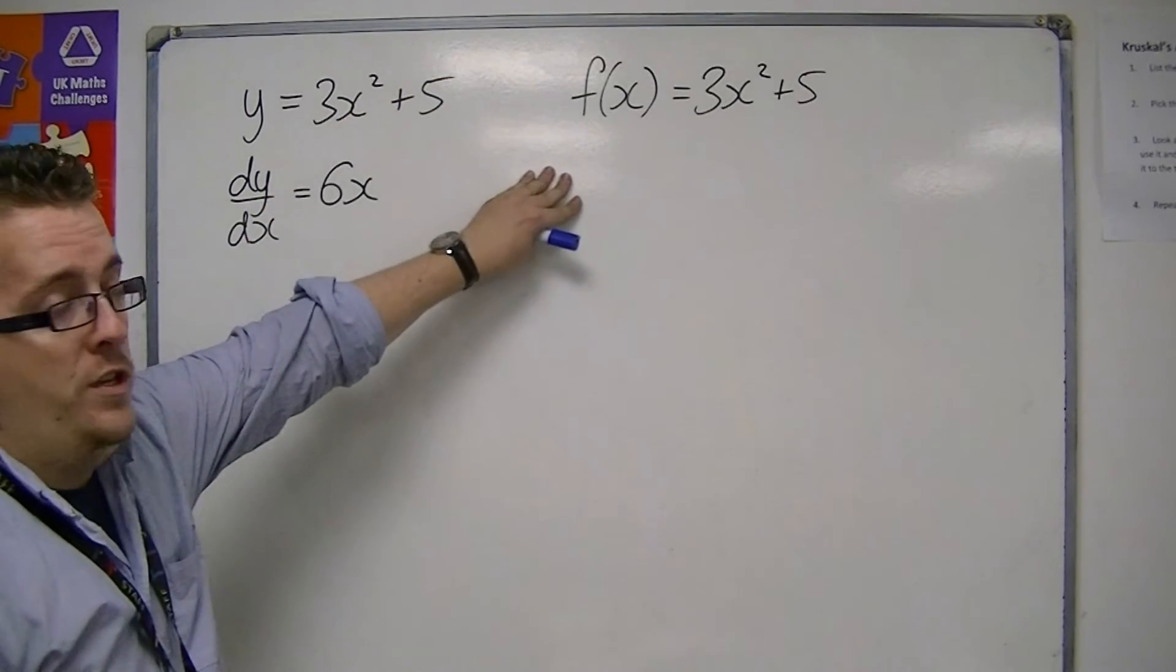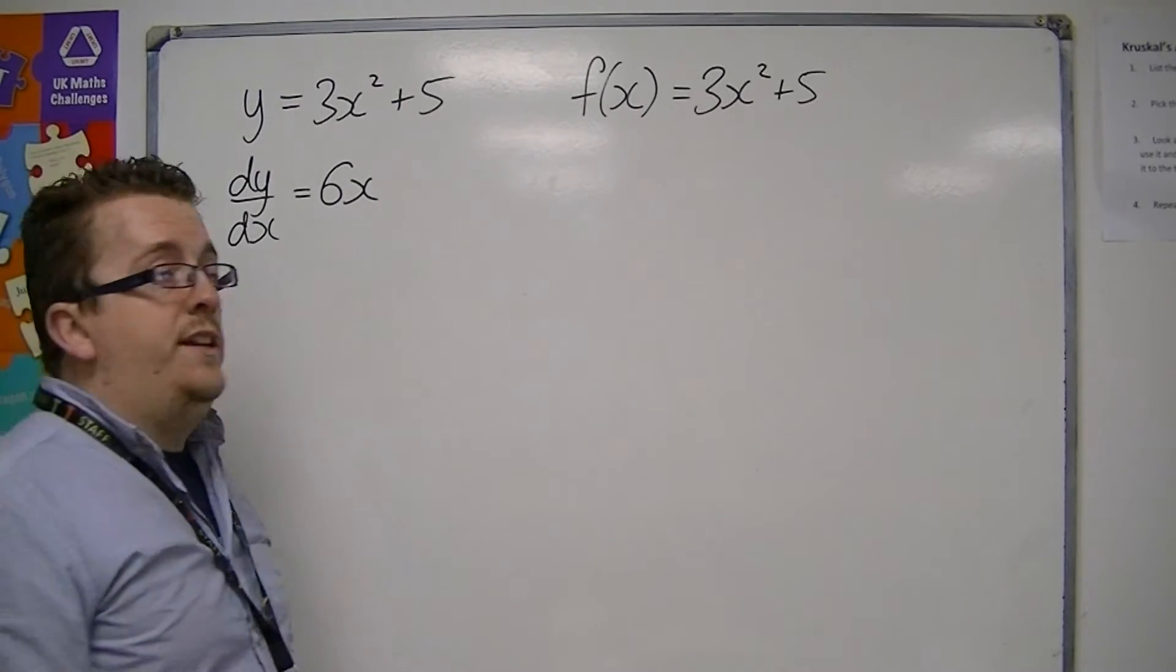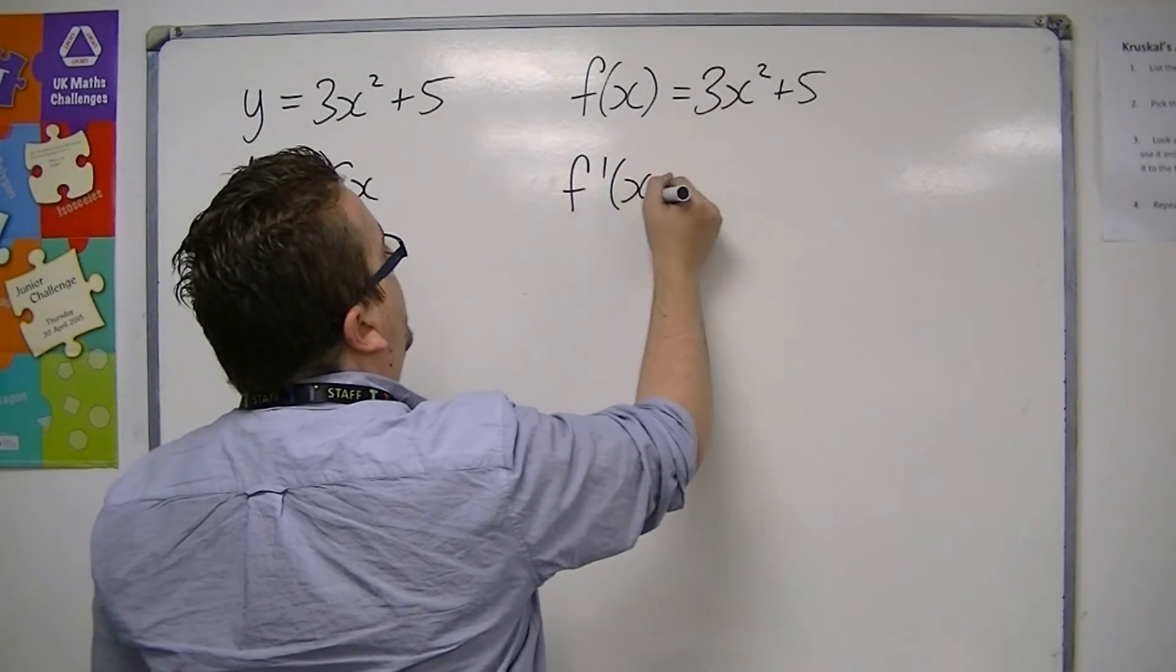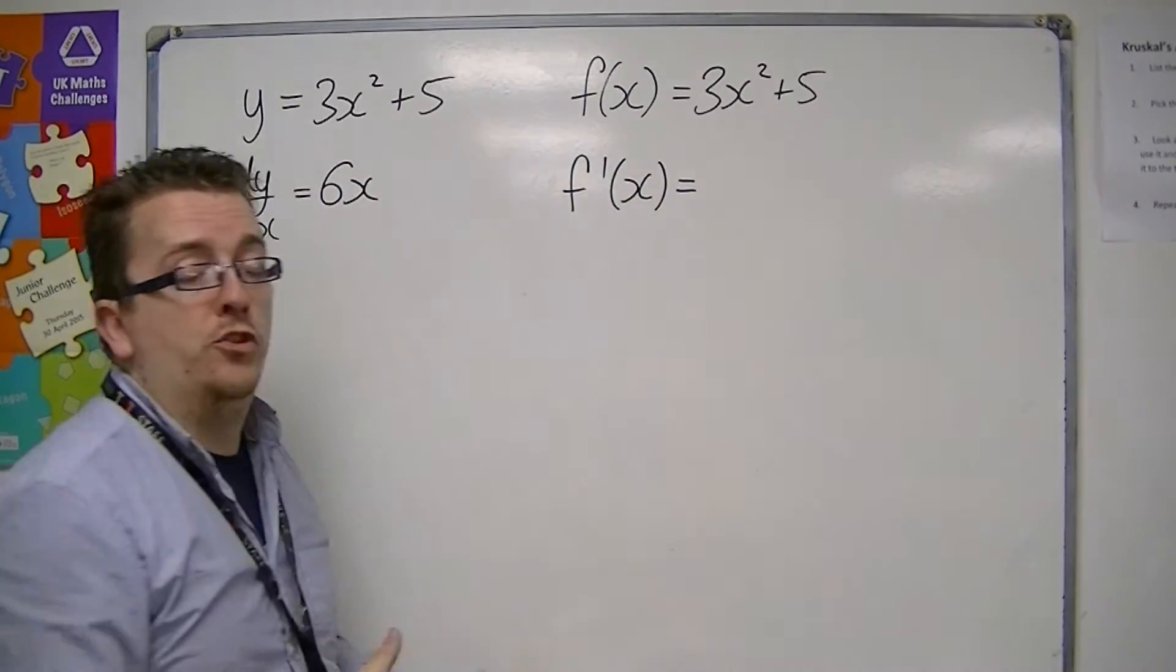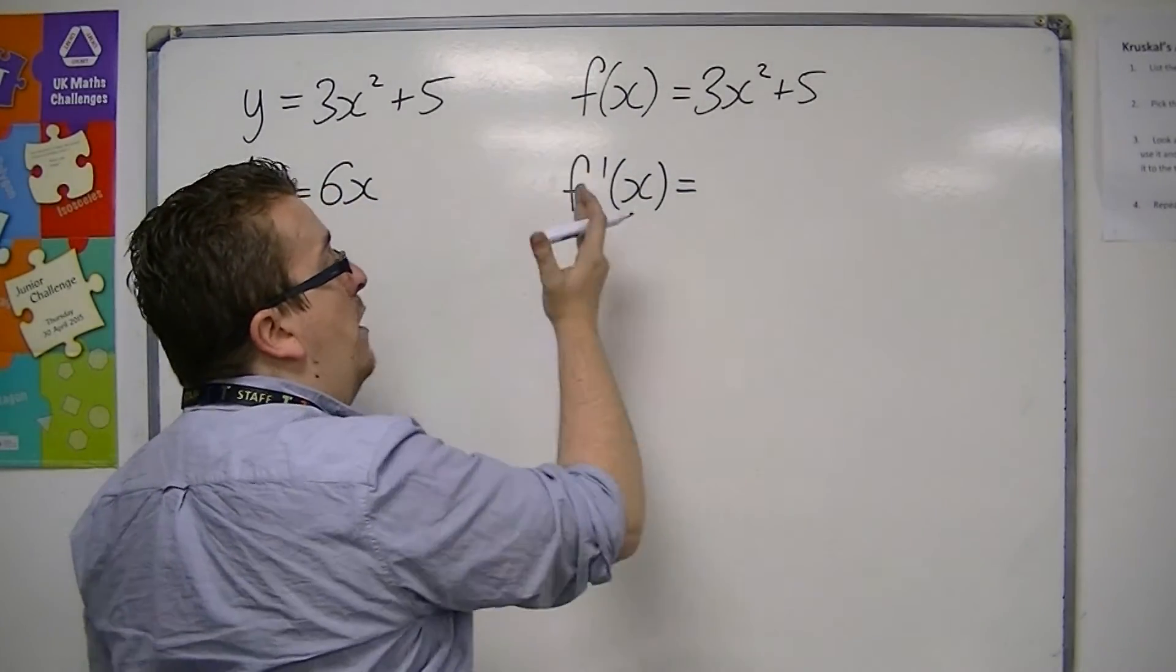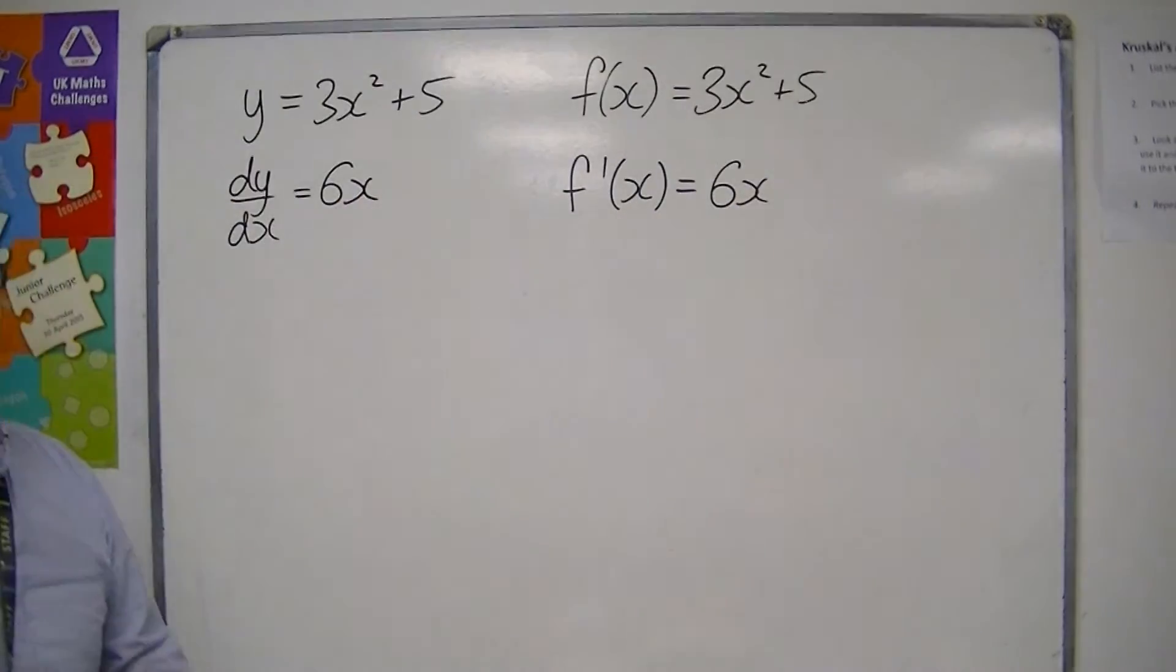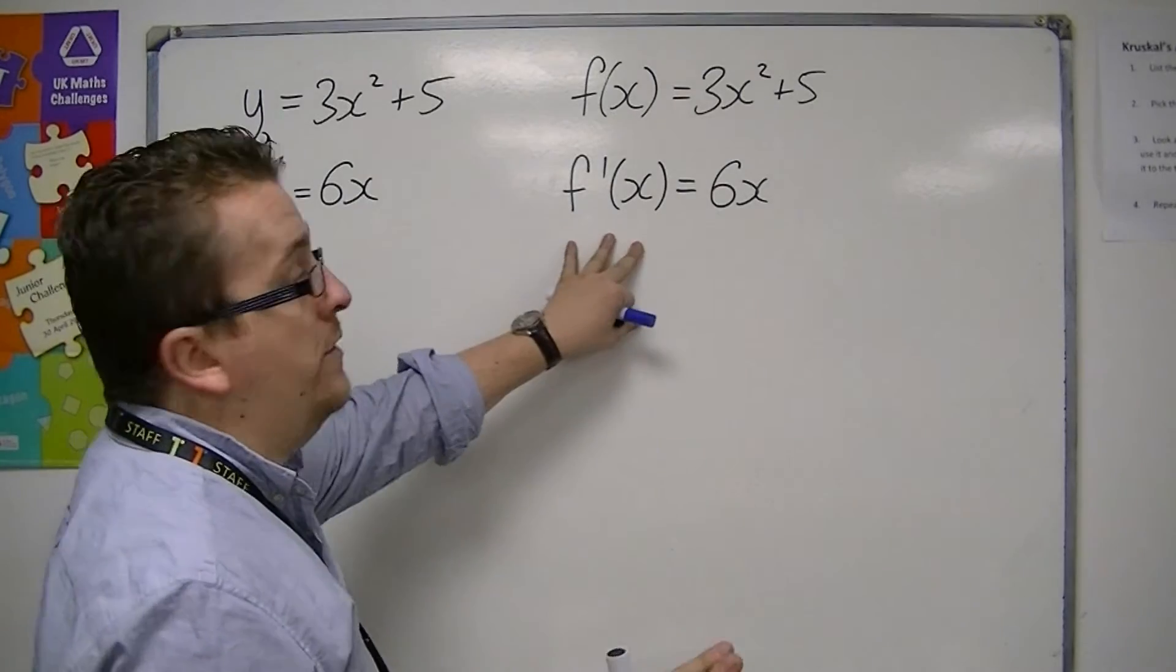For function notation, instead of using dy/dx, we can use f'(x). So it's just like an apostrophe, just a dash, and we say f prime. The actual differentiation technique is exactly the same. The notation at the front is different.